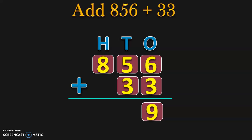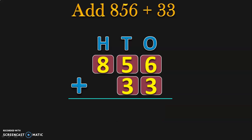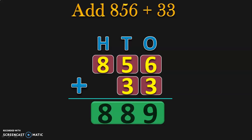6 plus 3 gives you 9. Next, move on to the tens place: 5 plus 3 gives you 8. Then move on to the hundreds place — you have 8, and since there is no digit in the second number there, you can assume it to be 0. So 8 plus 0 gives you 8. The sum of 856 plus 33 is 889.